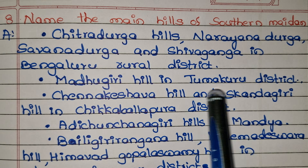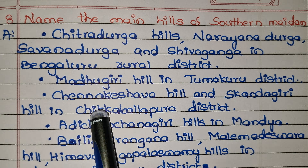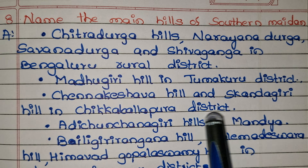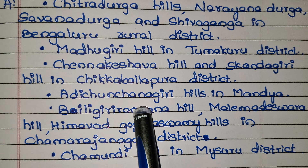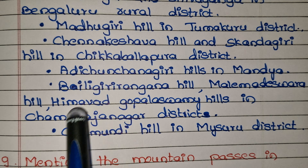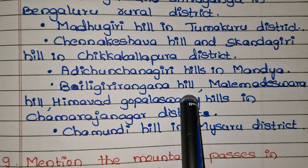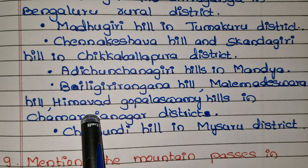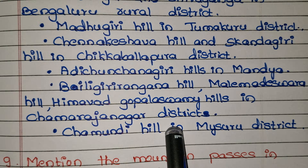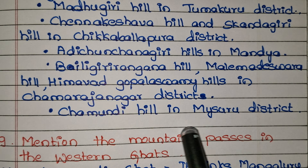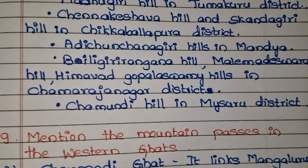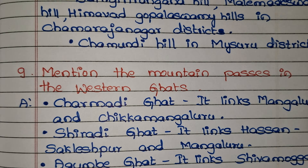Madugiri Hill in Tumkur district; Channakeshava Hill and Skandagiri Hill in Chikkaballapur district; Adichunchanagiri Hills in Mandya; Biligiriranga Hill, Male Mahadeshwara Hill, and Himavad Gopalaswamy Hills in Chamarajanagar district; and Chamundi Hill in Mysore district. These are all the main hills of the Southern Maidan.